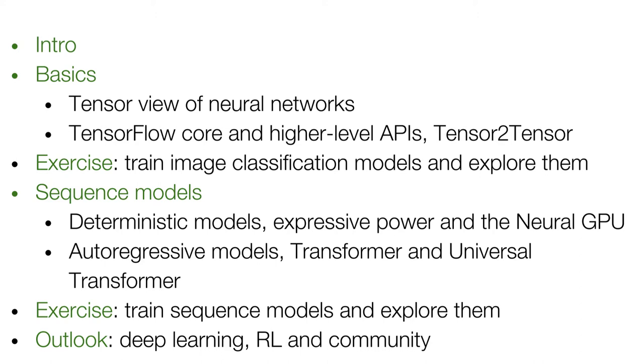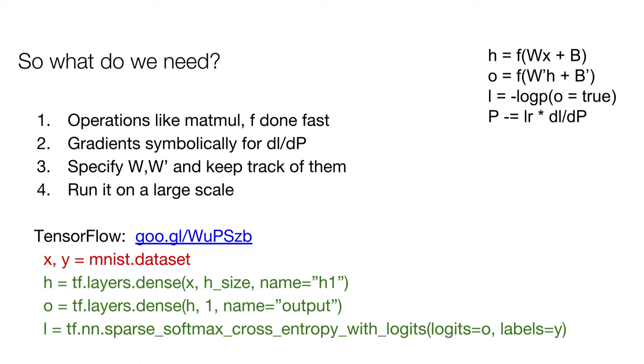So now some exercises, right? We want to get a better feeling for these image models. We trained one MNIST model which had one dense layer which took the image, 28 times 28, meaning 700 something, made it 128, put a relu, then went into 10 classes, put a relu, and then put a softmax cross entropy.